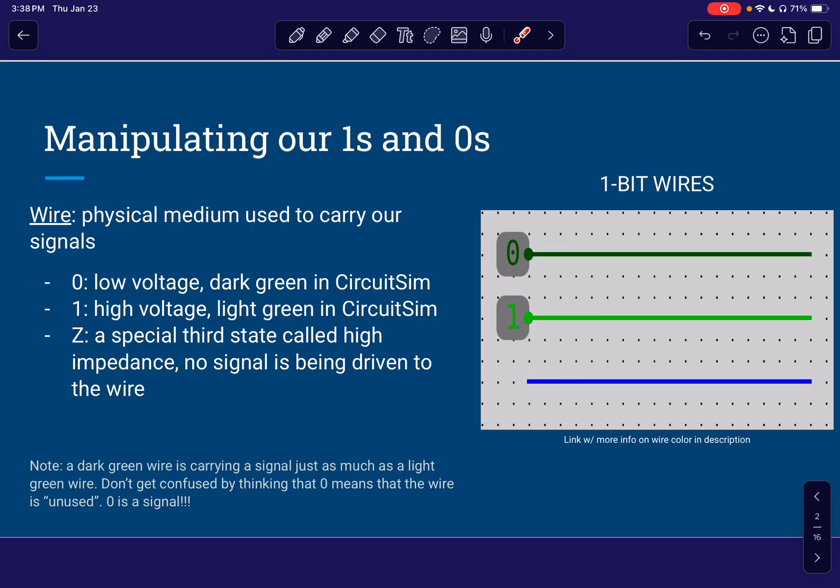Now, there's a special third state, which is a lot of times represented with a Z, called the high impedance state, and it's going to be represented with blue in circuit sim. And this means that no signal is being driven to the wire. So there's nothing on it. No signal is being used on it.